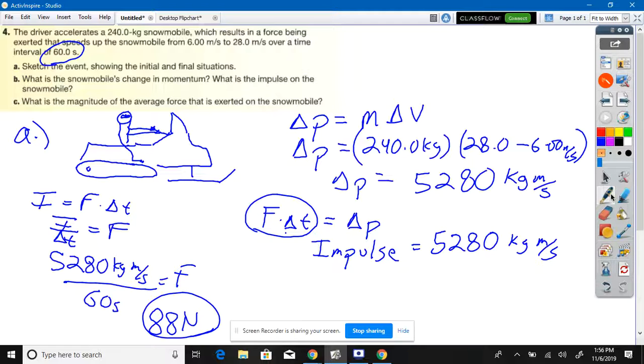See how the units work out, Mr. Ryan? So you have seconds over seconds, so you end up with kilogram meters per second squared, which is the same thing as a newton.